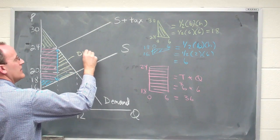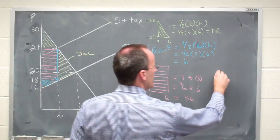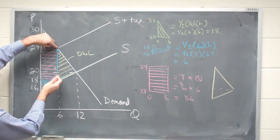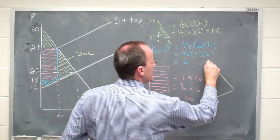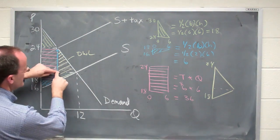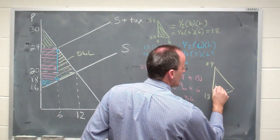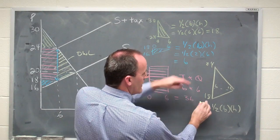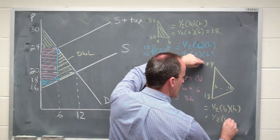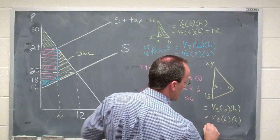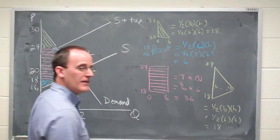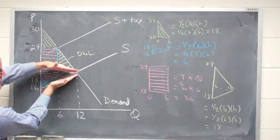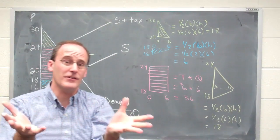So what we also need to do is think about what is this area right here. That's the deadweight loss. I'm going to pull that area out. If I do that, you'll see that this triangle, which is kind of on its side, has a base here from 24 to 18 and a height right here from 6 to 12. Since it's a triangle again, I want to take one half the base times the height. The base is 6, and the height is 6. That's one half of 36, which is 18. So in this particular case, 18 units of surplus, some of which were owned by the consumers, some of which were owned by the producers, just vanishes from the marketplace.